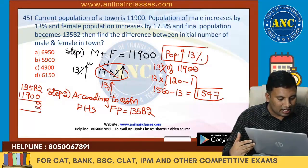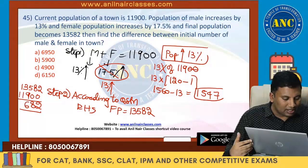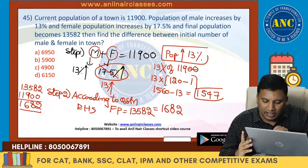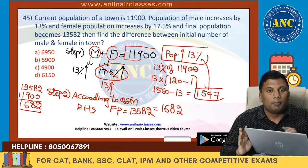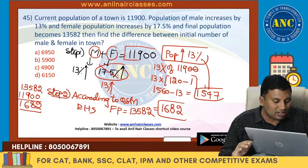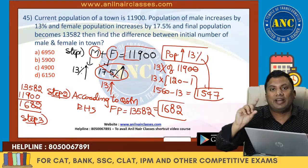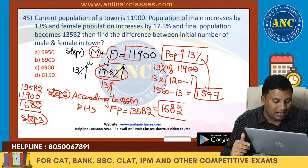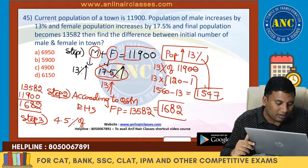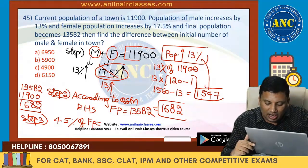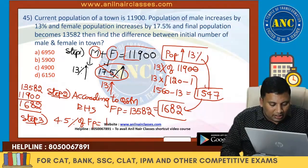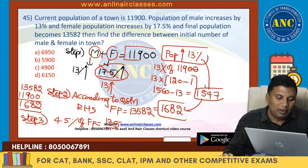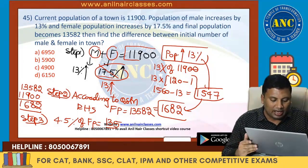How much is the actual increase? It is 1,682. Now think logically: if both increased by 13%, I would have got an increase of 1,547. But I got 1,682 — that extra 135 came because female is not increasing by 13% but by 17.5%, contributing an extra 4.5% of female population. The extra amount is 135.